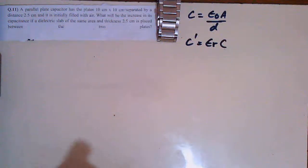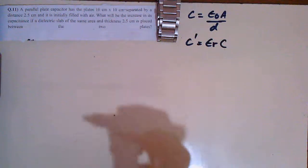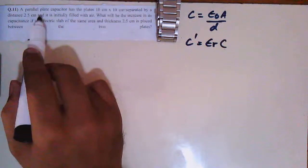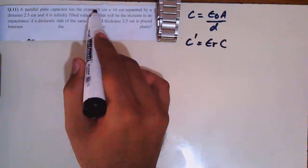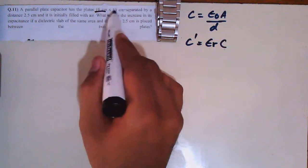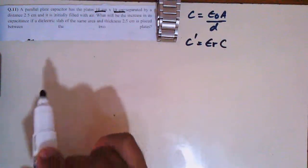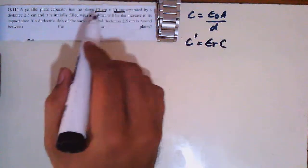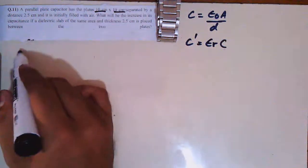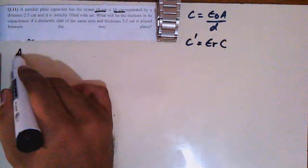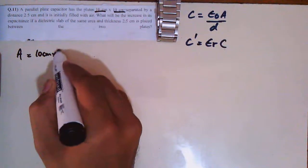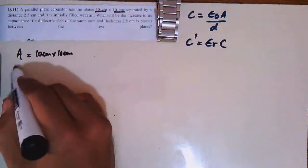Okay students, this is the first numerical from capacitors. The question starts like this: A parallel plate capacitor has plates 10 cm × 10 cm. Whenever dimensions are multiplied like this, they represent area — 10 cm by 10 cm.